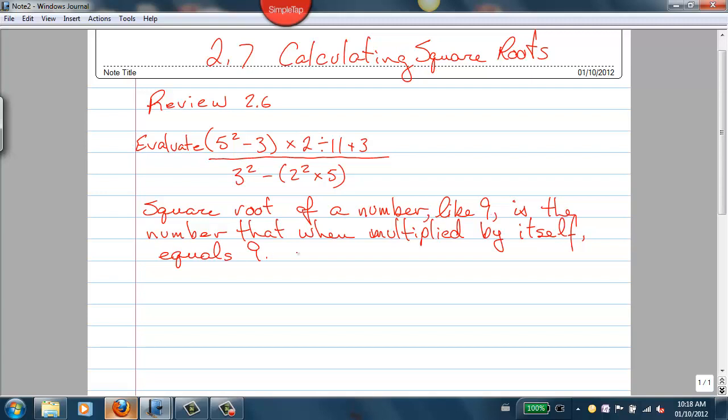So the square root of 9, for example, would be equal to 3, because 3 times 3 is equal to 9. The square root of 16 would be equal to 4 because 4 times 4 is equal to 16.